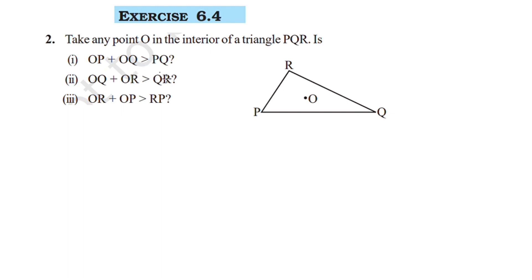What is OP plus OQ greater than PQ? This is OP. OP plus OQ is greater than PQ. Let's use a property: the sum of the length of any two sides of a triangle is greater than the length of the third side. So the answer is OP plus OQ is greater than PQ.